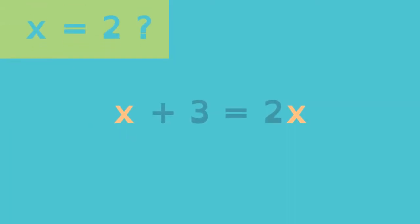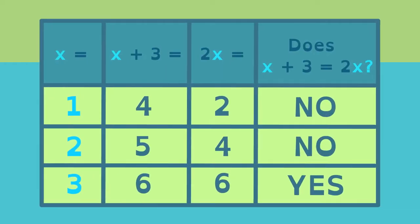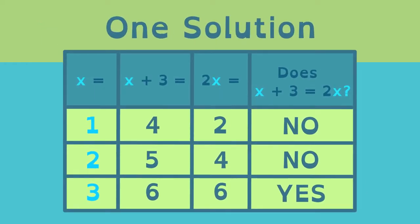Does x equals 2 make the equation true? No again! Let's try x equals 3. 3 plus 3 is 6. 2 times 3 is also 6. x equals 3 is the solution to this linear equation because it makes the equation true. This particular equation has only one solution, 3.